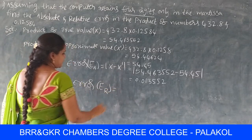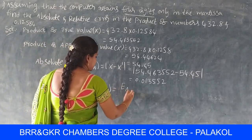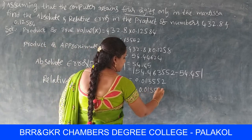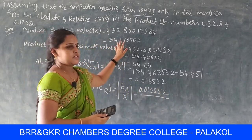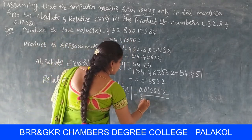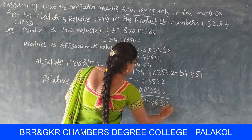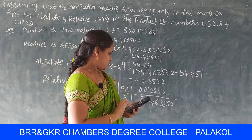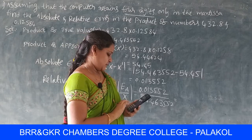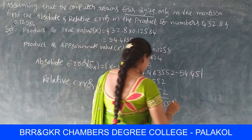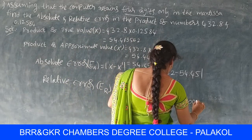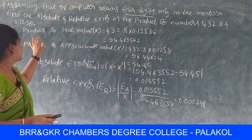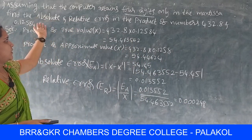Next, find the relative error ER. The relative error is the ratio of the absolute error divided by the true value: 0.0133552 ÷ 54.463552 = 0.000248. This value is the relative error.